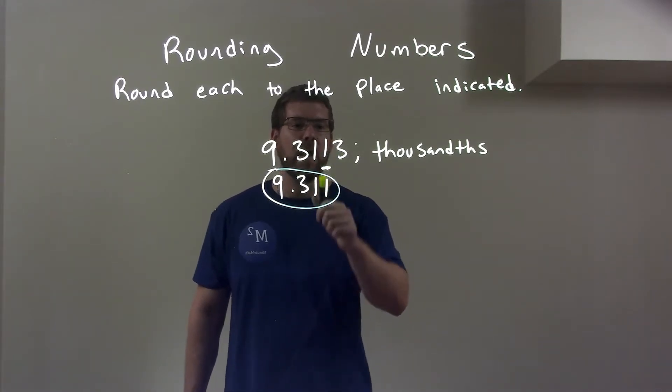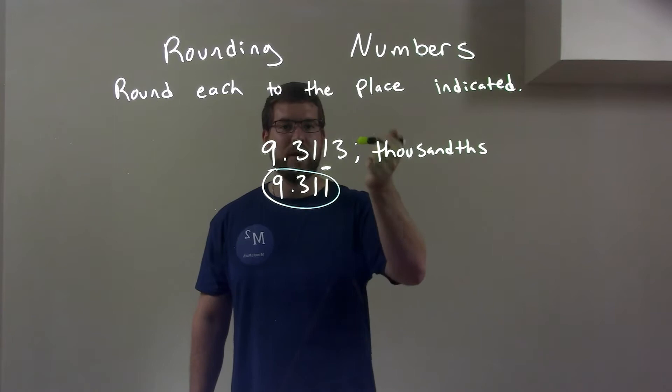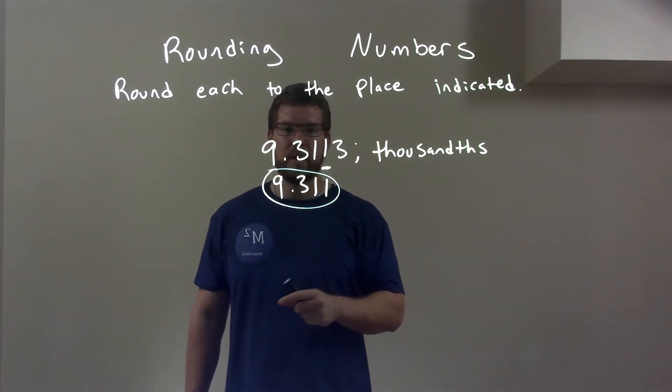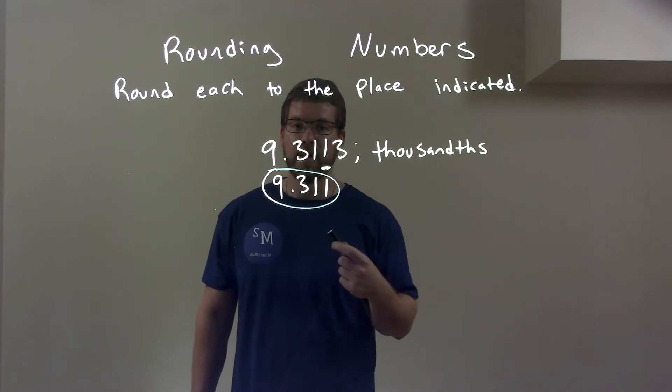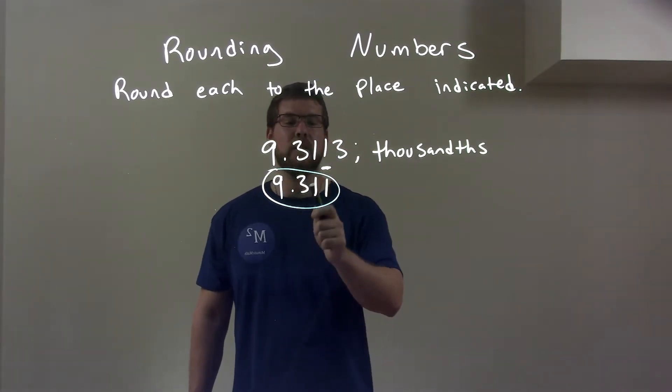I indicated it. I look to the right, I see three. Three caused that one to round down to stay a one. Three disappears. Bring everything else down, and we have again, our final answer of 9.311.